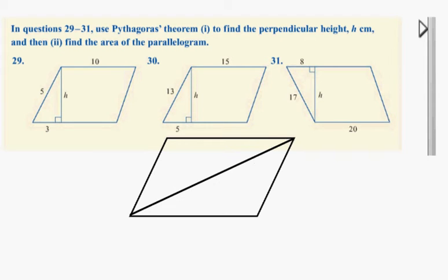So if you have two of them, if that's a half base by height, and the other one is a half base by height, the full parallelogram is simply base by height.